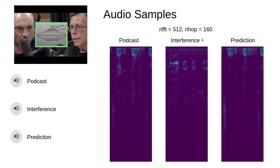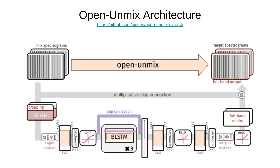Now let's take a look at the architecture. Here we have the Open Unmix architecture — you can head over to their GitHub page and check it out. I'll be explaining what happens at every layer. We're going to be feeding in time series signals. You can also feed in pre-computed spectrograms, but the way I did this is we'll use time series and the spectrogram will be computed internally.